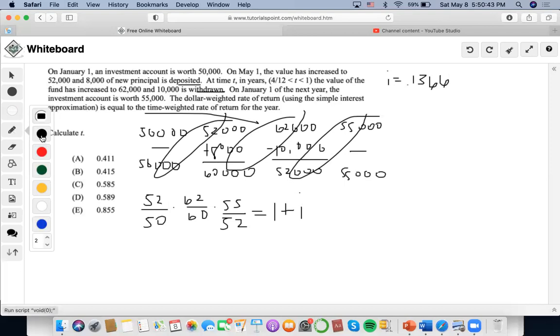So we can use the dollar weighted formula but first we have to find the interest. So again, the initial balance was $50,000, we deposited $8,000, we also withdrew $10,000, then we also added interest earned. And then the last value of the whole thing is this. So we could do $55,000 minus $50,000 minus $8,000 plus $10,000 and we could find that the interest will be equal to $7,000. So this is the top of the numerator of our dollar weighted return.